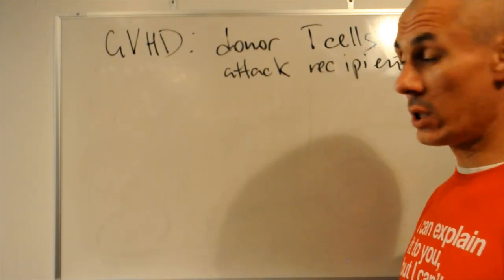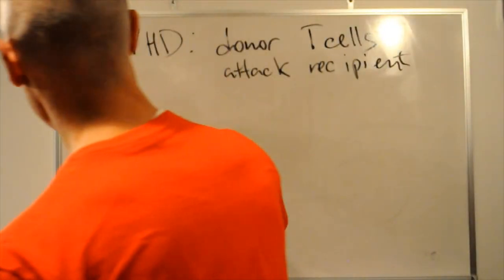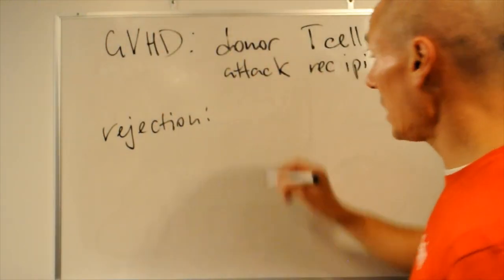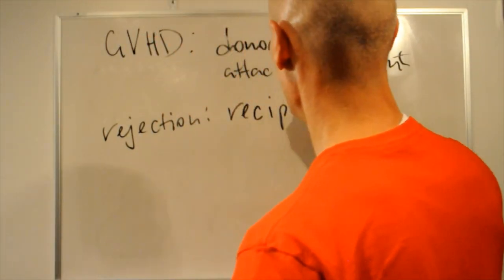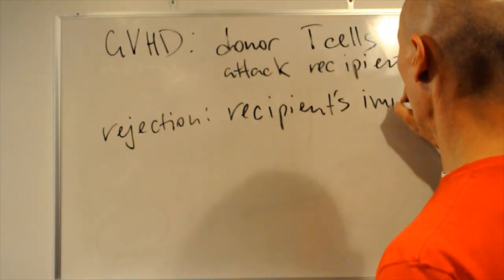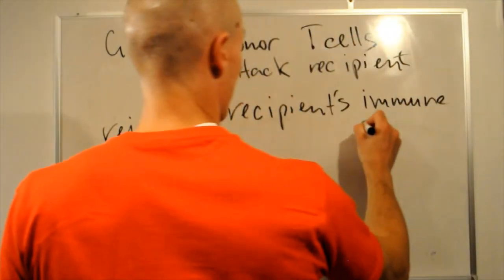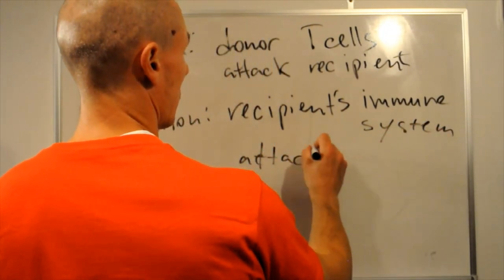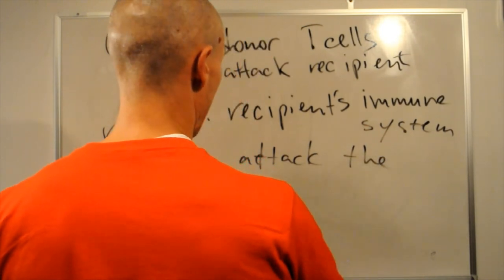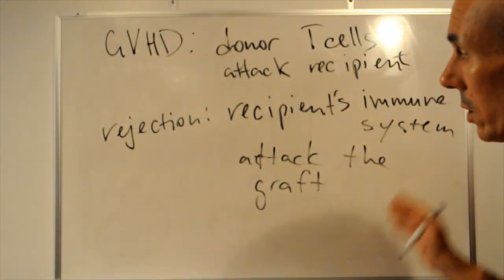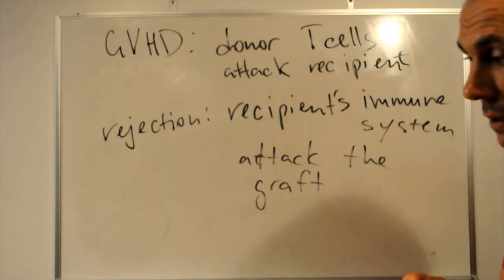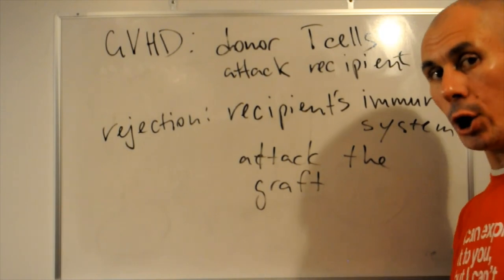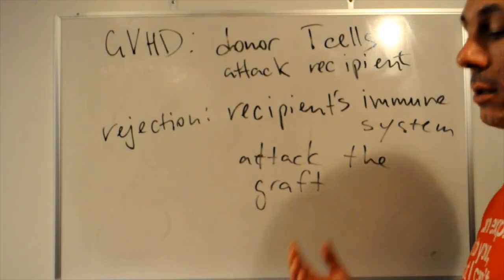And rejection is the opposite when a recipient immune system attacks the graft. So, for instance, when a patient receives a kidney transplant, his or her immune system will attack the kidney.